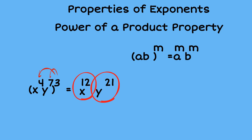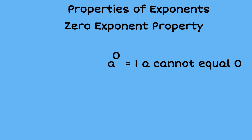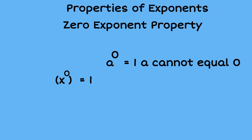The zero exponent property: no matter what you are raising to the zero power, it's always going to be one. The example we're going to look at is x cubed, all to the zero power. When we multiply exponents that gives us x to the zero, and anything to the zero power is one. So x to the third to the zero becomes one.